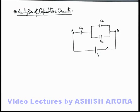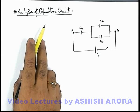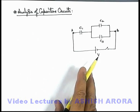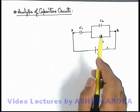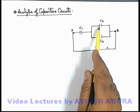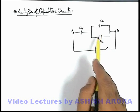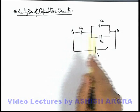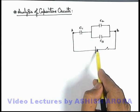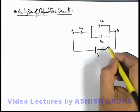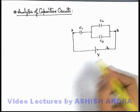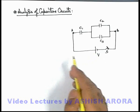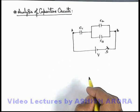Let us study the analysis of capacitive circuits. For example, here you can see in this picture a capacitive circuit in which 2 capacitors C2 and C3 are connected in parallel and their group is connected in series with capacitor C1. Their terminals A and B are connected across a battery with a switch. Now let's see what will happen if we close down the switch. I am going to discuss the analysis of various parameters associated with the circuit.